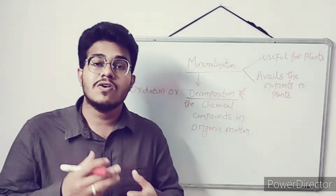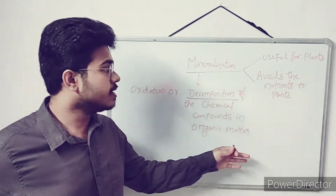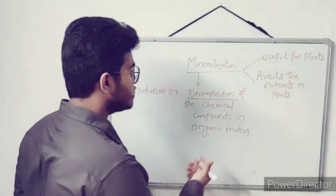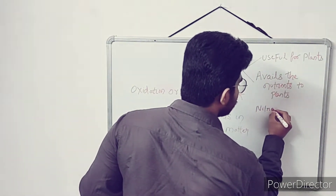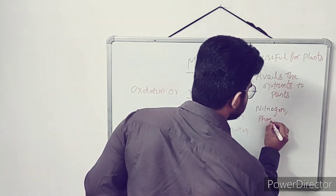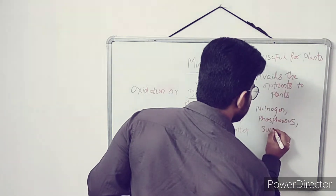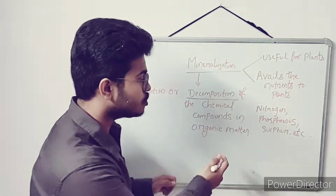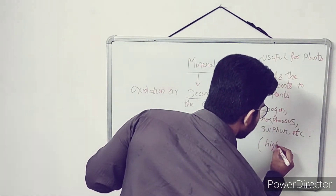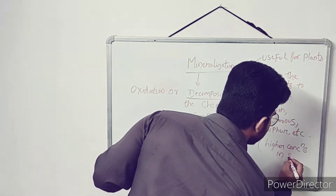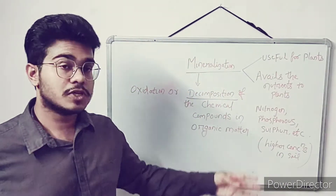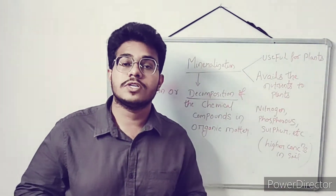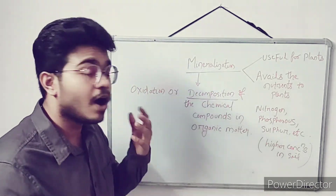The chemical compounds present in the organic matter get broken down, and it is useful for the plants. The plants can uptake their nutrients — like nitrogen, phosphorus, and sulfur. These elements are generally present in higher concentrations in the soil. So when nitrogen, phosphorus, and sulfur are needed for the plants, this mineralization helps in making these elements available to plants easily.